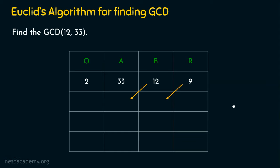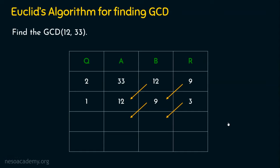Now carry out the same division: 12 divided by 9. 9 times 1 is 9 and the remainder is 3. So quotient is 1 and remainder is 3. B is still not zero, so we repeat the operation. 9 is placed in A and 3 is placed in B. Now do the division: 9 divided by 3. 3 times 3 is 9 and the remainder is zero. So quotient is 3 and remainder is 0. B is still not zero — it is still 3 — so we do the shifting operation one more time.